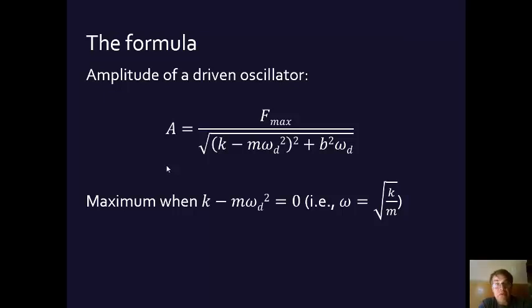Well, what is that? Well, the square root of k over m is the natural frequency, the kind of natural frequency from a simple harmonic motion. And so, when the driving angular frequency, omega_d, is equal to the natural frequency, that's when we have a maximum amplitude.